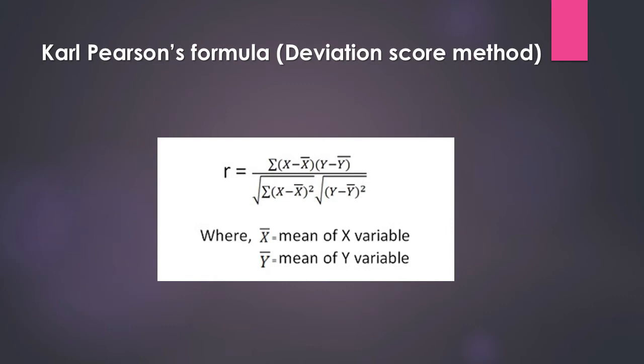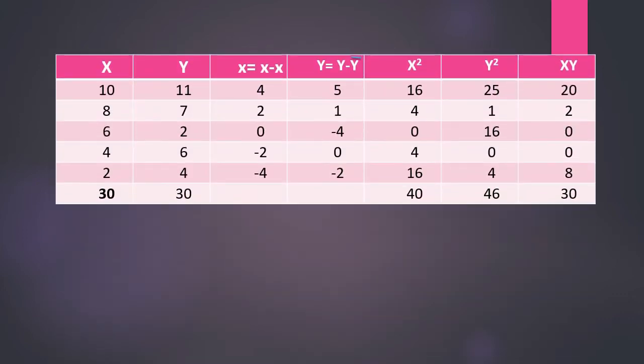The Pearson correlation formula is: r equals sigma(x minus x-bar)(y minus y-bar) all divided by the square root of sigma(x minus x-bar) squared times sigma(y minus y-bar) squared, where x-bar is the mean of x and y-bar is the mean of y. In the example, x values are 10, 8, 6, 4, and 2; y values are 11, 7, 2, 6, and 4. The total is 30 and the mean for each is 6.